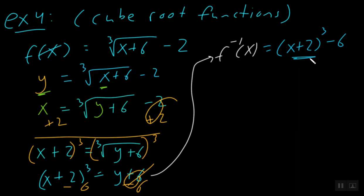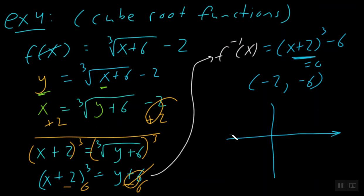Notice here, x plus 2 — we set that equal to 0, so x equals negative 2. Our vertex is at negative 2 comma negative 6. We graph that point — negative 2 to the left and down 6. A cubic function comes up, flattens out, and then goes up again — that S-shaped curve we've touched upon two or three times throughout the year. That's what it's going to look like. Easy.